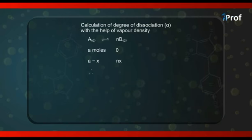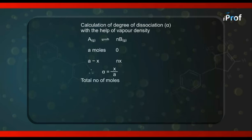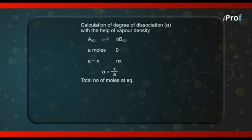Therefore, degree of dissociation alpha will be equal to X upon A. Out of A moles of the reactant, X moles have undergone dissociation. Therefore, alpha becomes X upon A. And the total number of moles at equilibrium becomes A minus X plus NX.